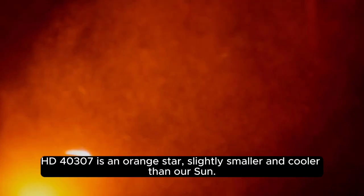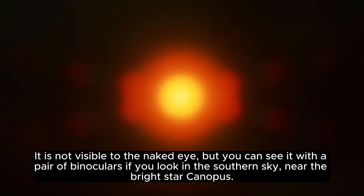HD 40307 is an orange star, slightly smaller and cooler than our sun. It is not visible to the naked eye, but you can see it with a pair of binoculars if you look in the southern sky, near the bright star Canopus.